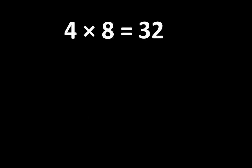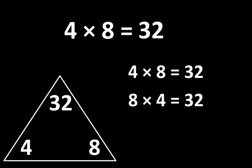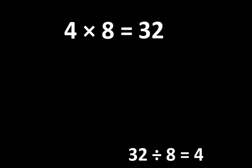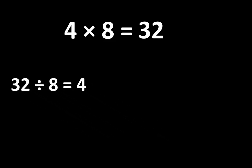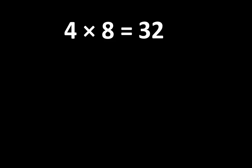4 times 8 is equal to 32. Let's examine some ways that 4, 8, and 32 are related to each other. If 4 times 8 is equal to 32, then 8 times 4 is also equal to 32. And since multiplication is related to division, we also know that 32 divided by 4 is equal to 8, and 32 divided by 8 is equal to 4. There are several different ways to write this idea, and that can be very useful. So understanding 4 times 8 is more than simply knowing that the product is 32.